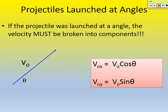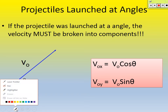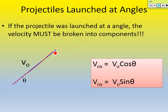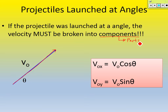Hopefully you have your chapter 5 guided notes out. There's something to write down right here: if the projectile was launched at an angle, the velocity must be broken into components. We need to break its motion into components — horizontal and vertical. Components means parts, so those parts are the horizontal and vertical velocities.